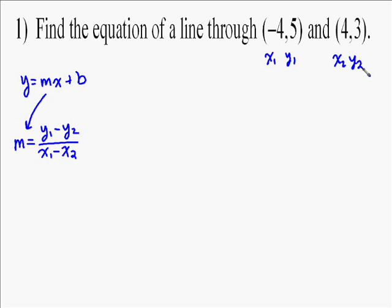So the y1 is 5, y2 is 3, so we're going to have 5 minus 3 over x1 is negative 4, x2 is 4. So you're going to have 5 minus 3 over negative 4 minus 4. So that gives you 5 minus 3 is 2, negative 4 minus 4 is a negative 8. Simplify it, you always want to simplify it, it's going to simplify to negative 1 fourth.